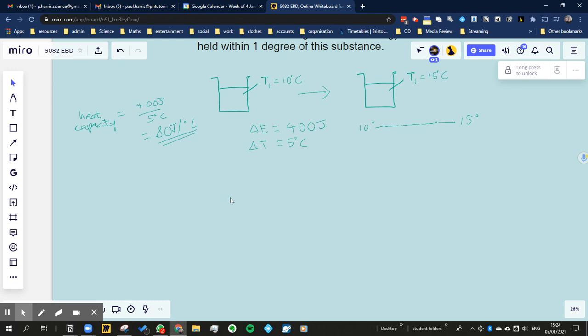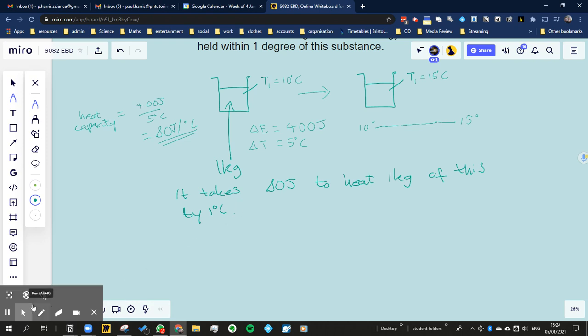Now if it turned out that this was 1 kilogram, well, then what we're saying is that it takes 80 joules to heat 1 kilogram of this, whatever it is, by 1 degree C, right? Yeah, happy with that? So how much energy? Right, so it takes 80 joules to heat up 1 kilogram of this. How much energy would it take to heat up 2 kilograms?